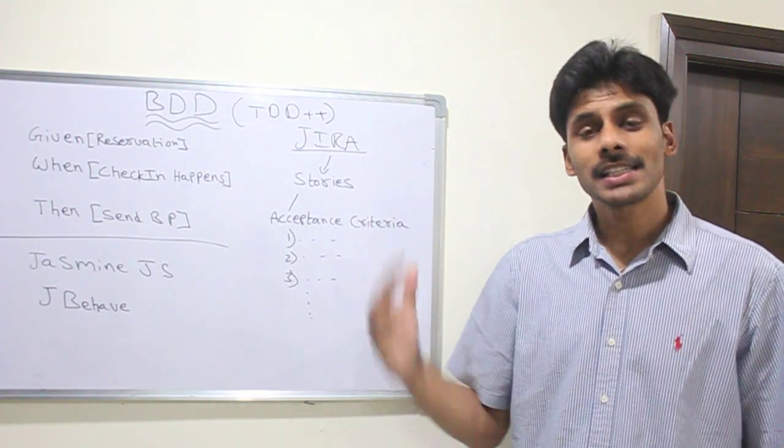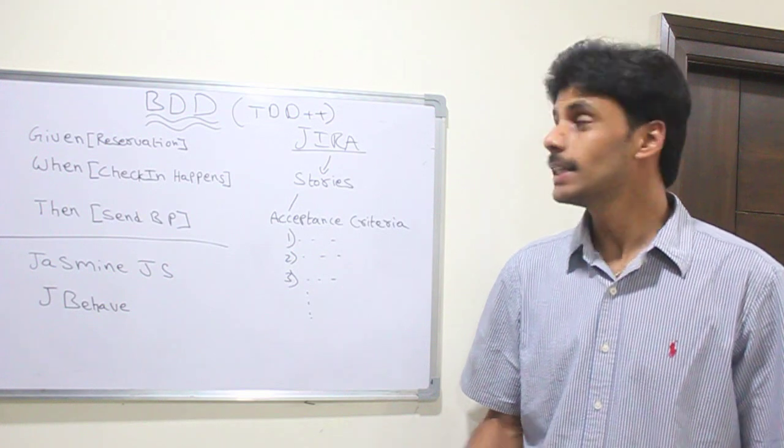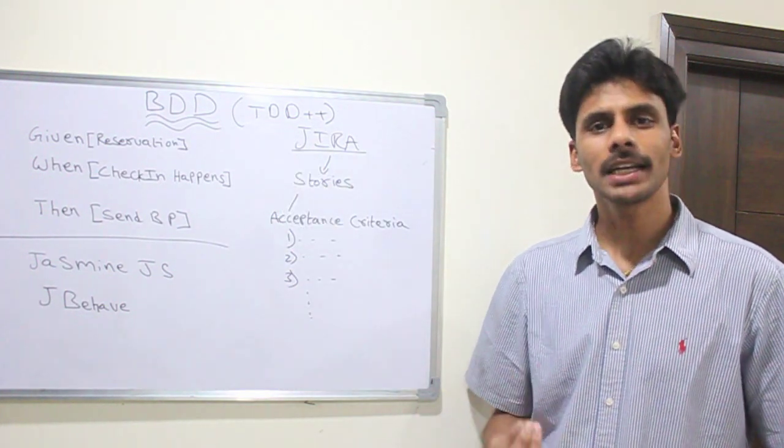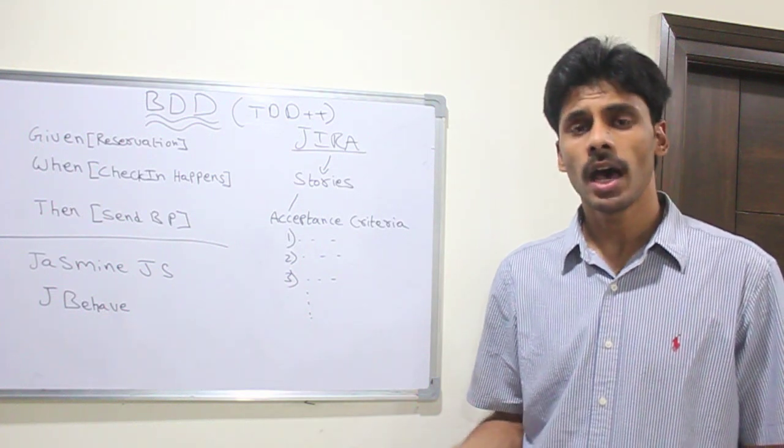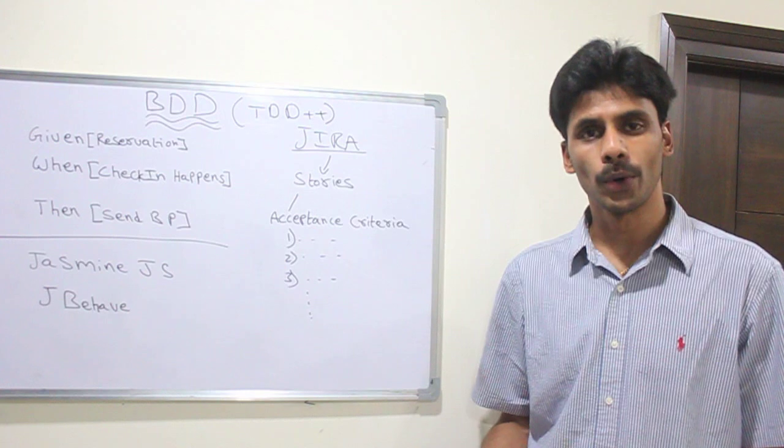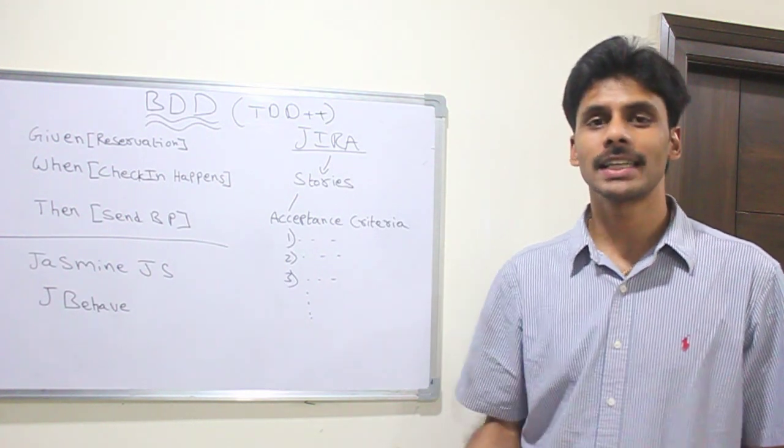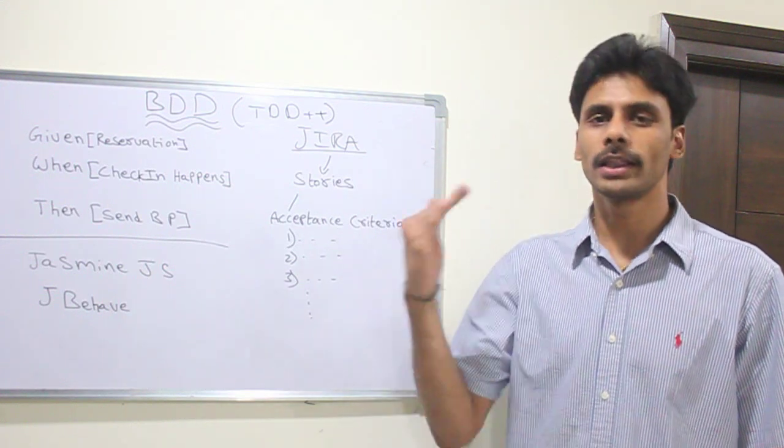BDD is a successor of TDD or an improvement over TDD. TDD stands for test driven development wherein we write our test cases first as a developer or as an automation team, and then we start writing our code. Once the implementation or the development is done and the testing team runs the tests against our code, all the tests should pass.